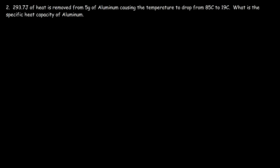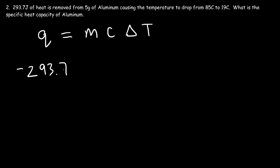Number two: 293.7 joules of heat is removed from 5 grams of aluminum, causing the temperature to drop from 85 degrees Celsius to 19 degrees Celsius. What is the specific heat capacity of aluminum? So let's use the same formula. Q represents the heat energy — but notice that heat energy is removed, so in this case Q is negative 293.7.